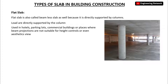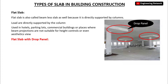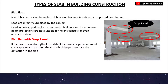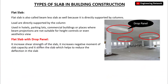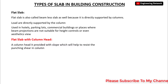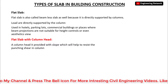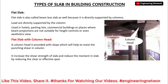Flat slabs are further divided into three types. The first is a flat slab with a drop panel, as you can see on your screen. Drop panels are provided at the junction of the slab and column. Their function is to increase the shear strength of the slab, increase the negative moment capacity of the slab, and stiffen the slab, which helps to reduce deflection. The second type is a flat slab with a column head, where a column head is provided with a slope, which helps to resist punching shear in the column.